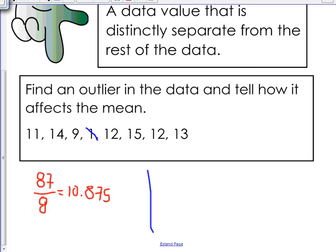Alright, so in this case, when you add all of the numbers up, instead of getting 87, you would get 86. And because there are only 7 numbers, we would divide it by 7. So 86 divided by 7 is 12 point, and I'm just going to round it to 9. Alright, like 12 and 29 hundredths.